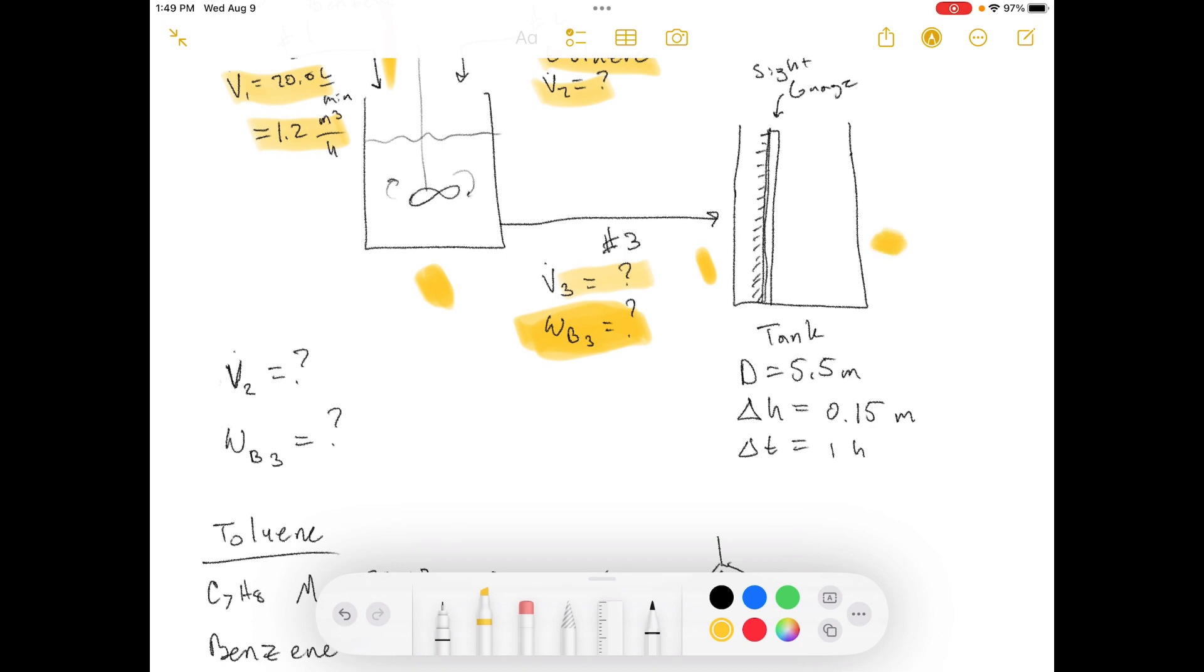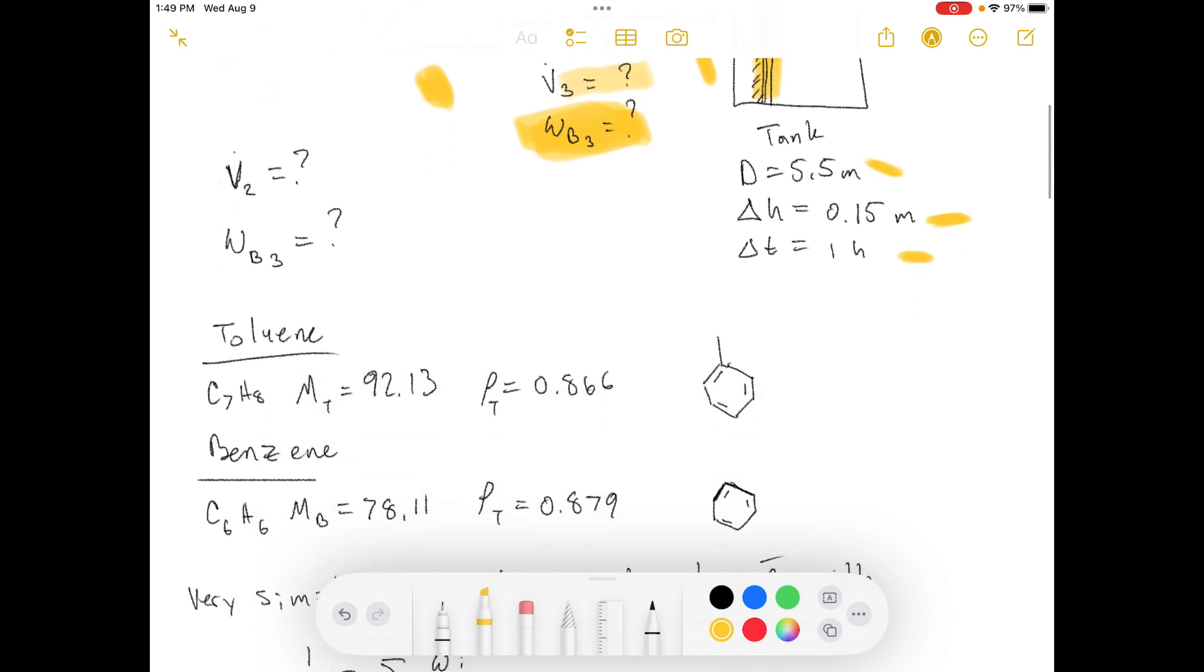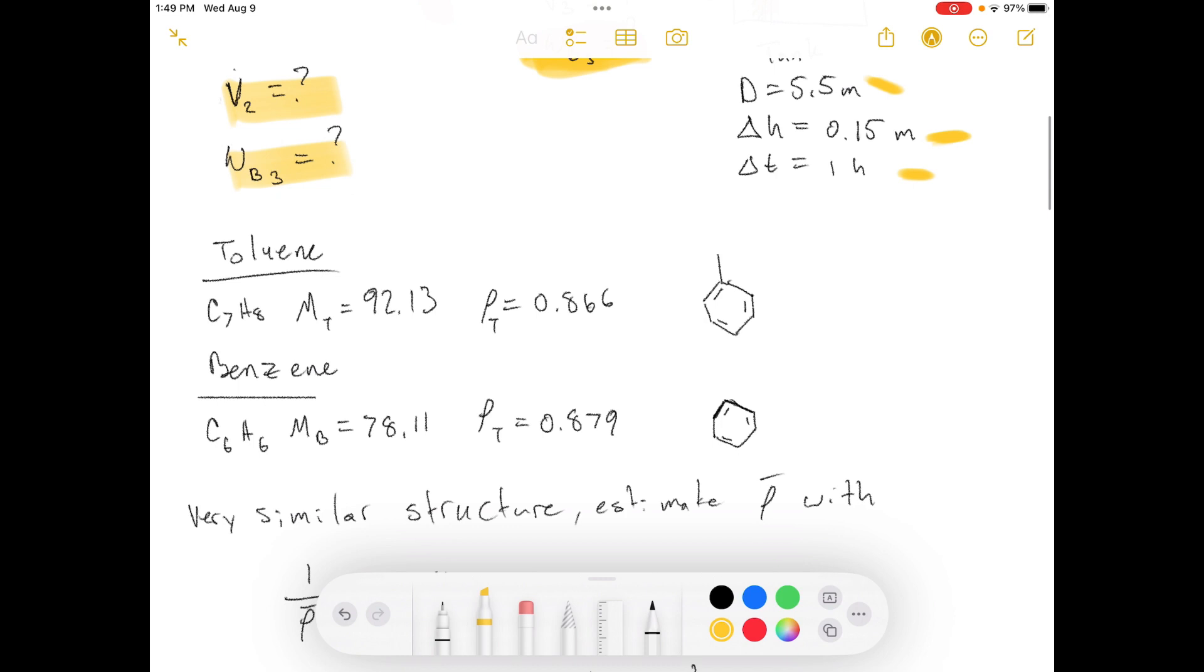They have this sight gauge here. The level in the tank rose up a certain amount in a one-hour period. So, it rose up 0.15 meters in one hour. And the diameter of the tank is 5.5 meters. We want to know what these things are.